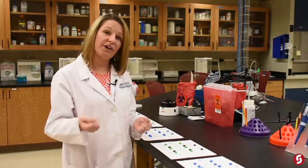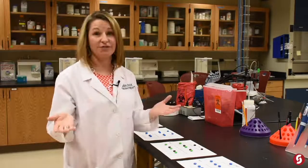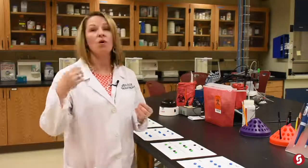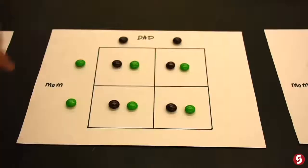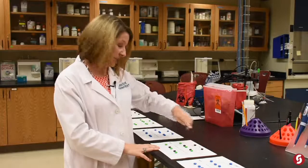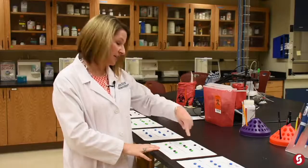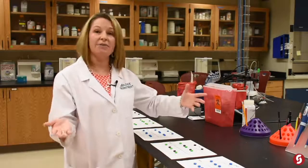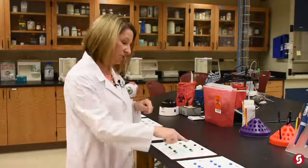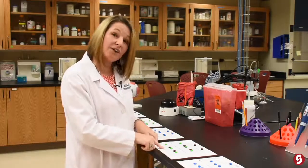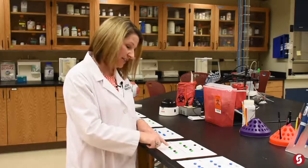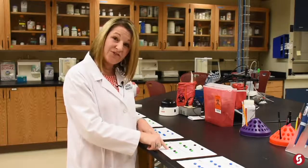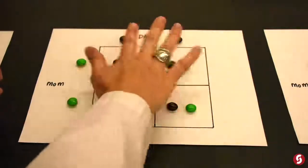Where it gets interesting is where you have parents that are not homozygous — where you have a heterozygous situation or parents with different colors. In this Punnett square, we have a dad who is homozygous for brown and a mom who has green eyes. When we cross these two people, every time they have a child, the kids end up being heterozygous — they have one brown allele and one green. But because green is recessive to brown, all of these kids will have brown eyes.